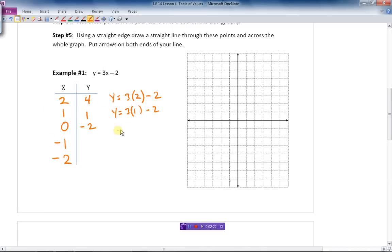Put negative 1 in there. I got 3 times negative 1 minus 2. 3 times negative 1 is negative 3. So we got negative 3 minus 2 more, that gives us negative 5. And the last one, put negative 2 in there. 2 times negative 2 is negative 6 minus 2 more is negative 8.